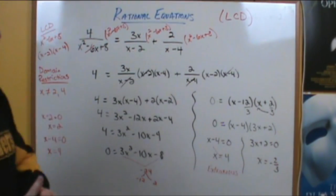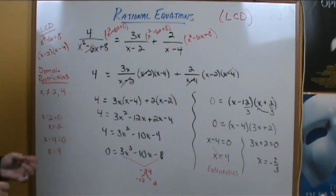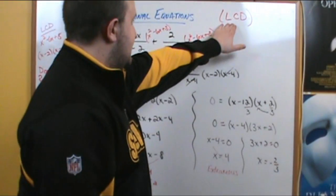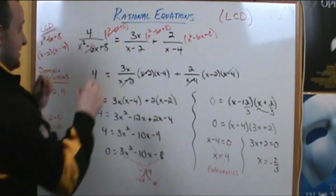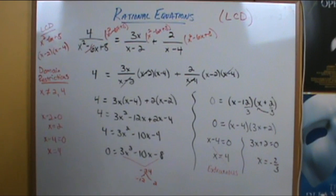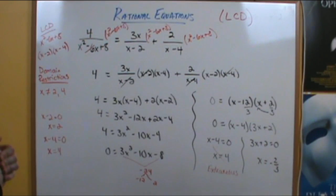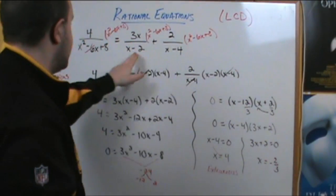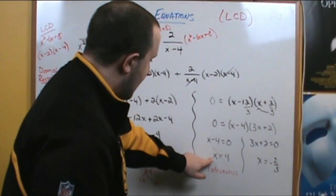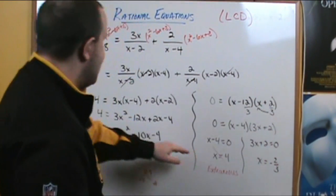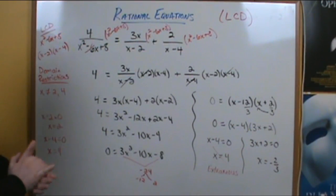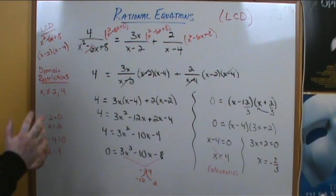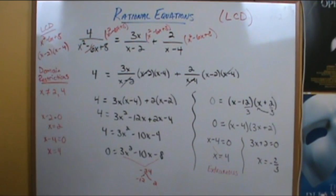That's the gist of rational equations. The key is: first, find the least common denominator, then multiply both sides of the equation by it. Since you're dealing with rational equations, always check the domain restrictions — if a solution creates a division by 0, it's extraneous and must be excluded. Thanks for watching.